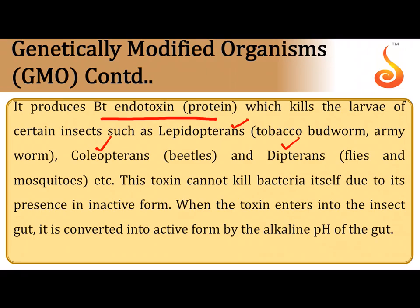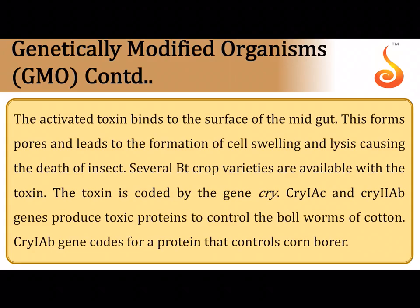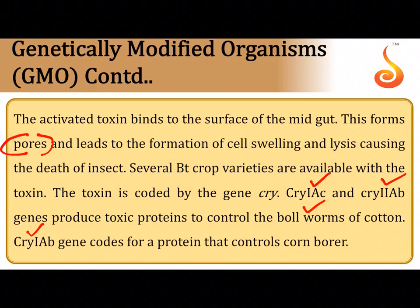The Bt toxin does not kill the bacteria that produces it because the toxin is produced in its inactive form called protoxin. When ingested by the insect and reaching the gut, it is converted to its active form. The activated toxin binds to the surface of the midgut, causing pore formation, cell swelling, and lysis. Specific cry genes include cry1Ac and cry2Ab against cotton bollworms, and cry1Ab against the corn borer.